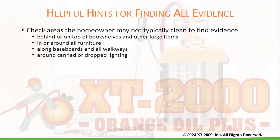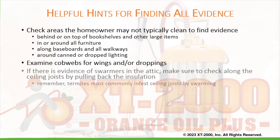Along baseboards and all walkways. Around canned or drop lighting. Examine cobwebs for wings and/or droppings. If there is evidence of swarmers in the attic, make sure to check along ceiling joists by pulling back the insulation.